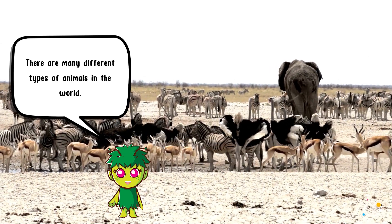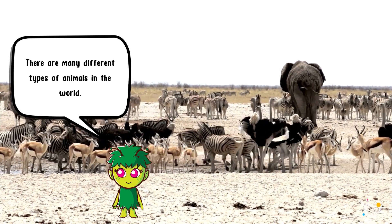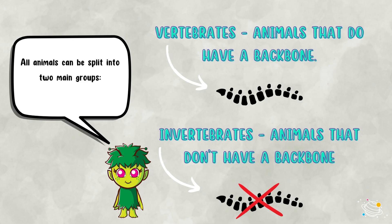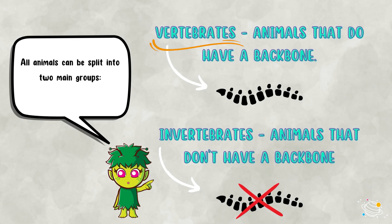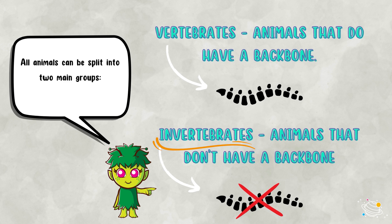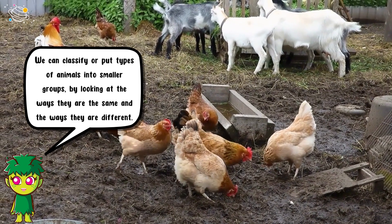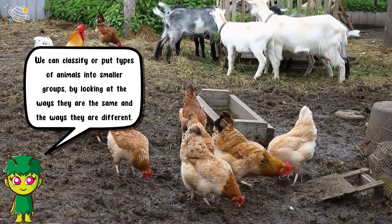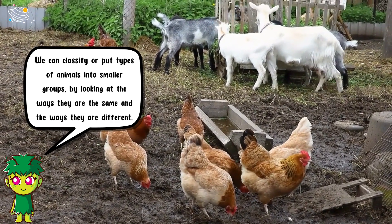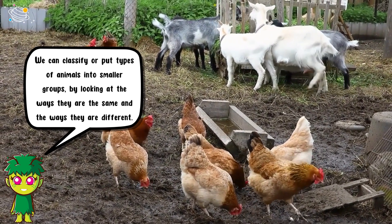There are many different types of animals in the world. All animals can be split into two main groups: vertebrates, animals that do have a backbone, and invertebrates, animals that don't have a backbone. We can classify, or put types of animals into smaller groups, by looking at the ways they are the same and the ways they are different.